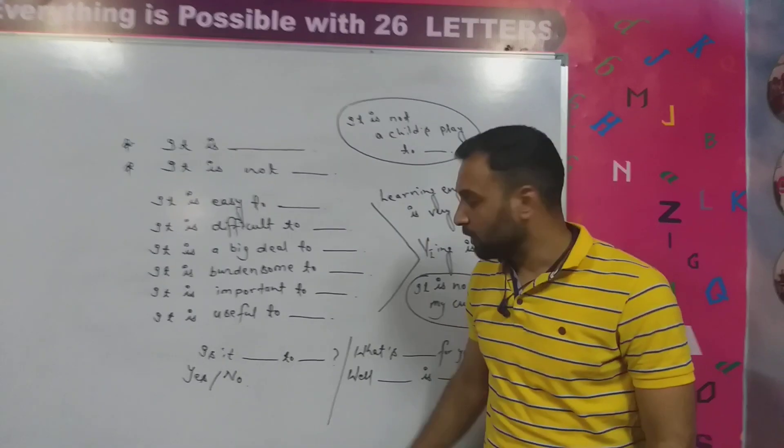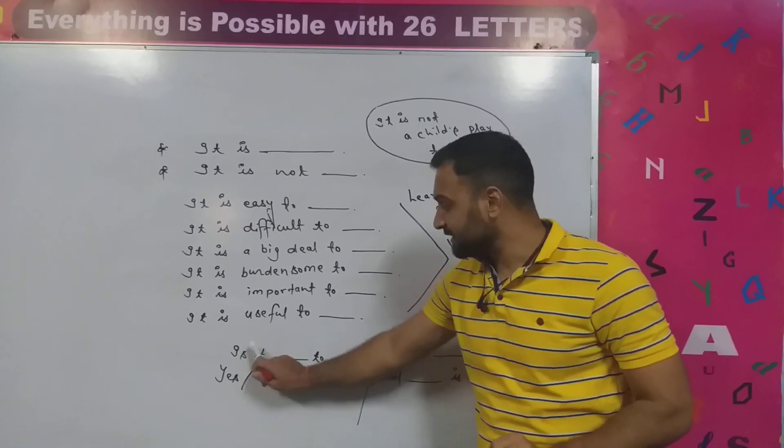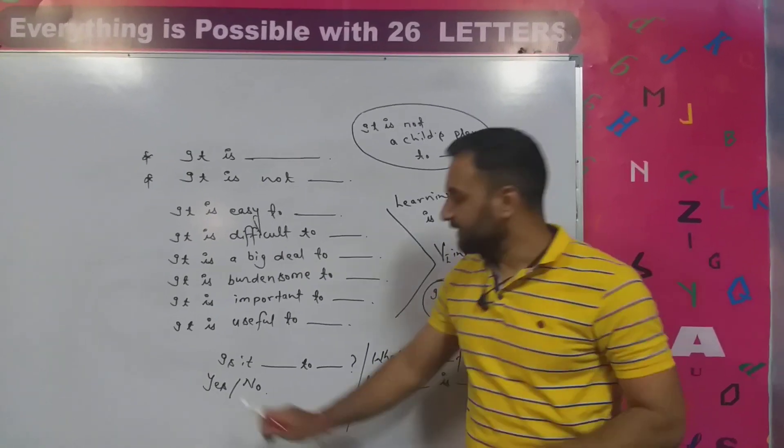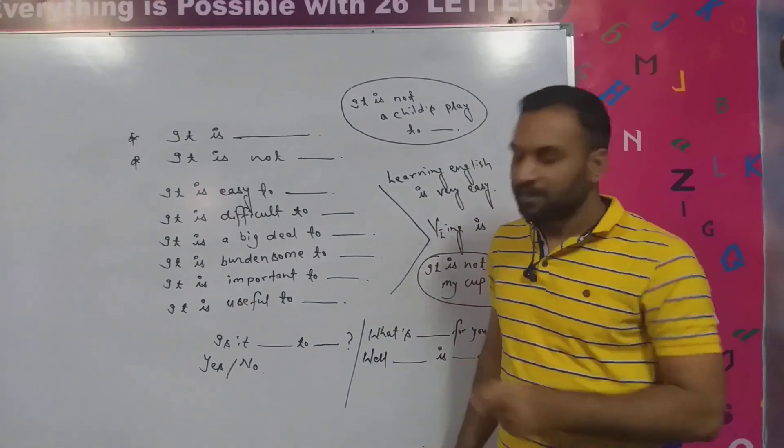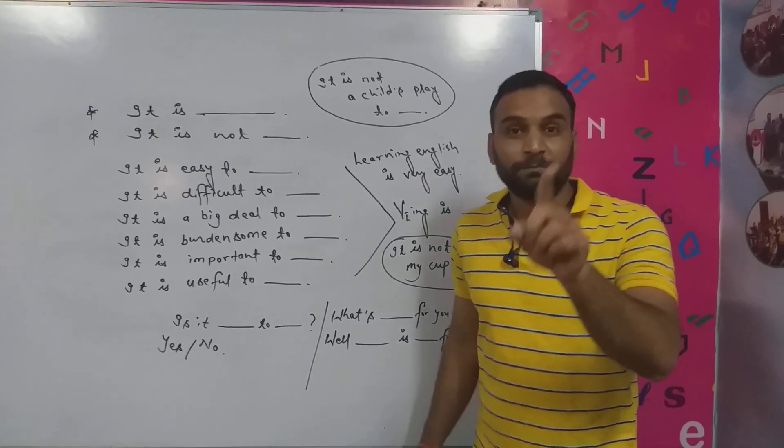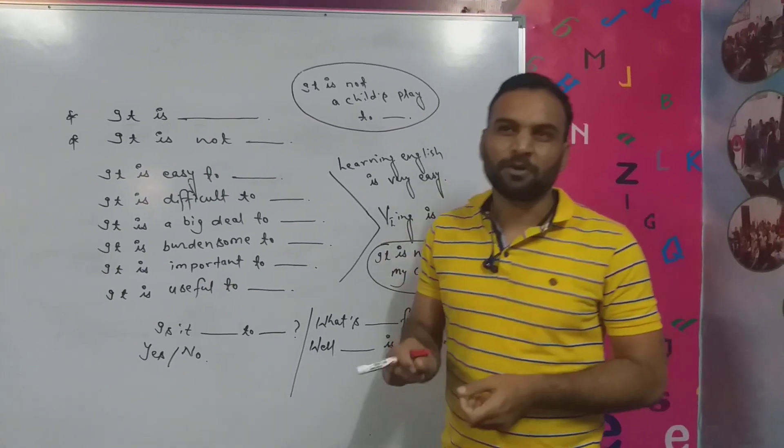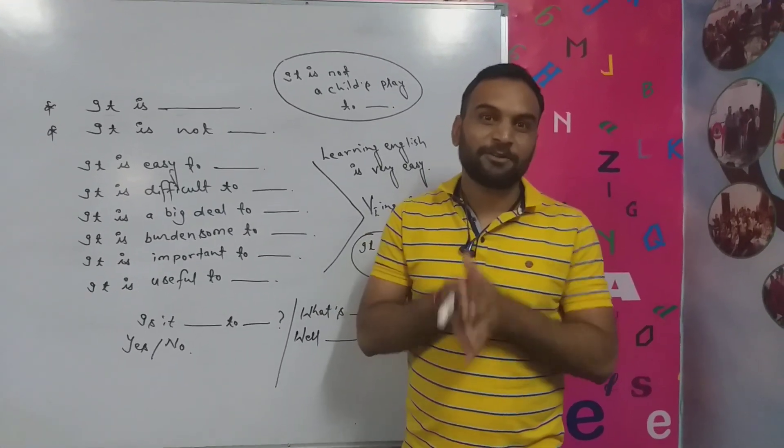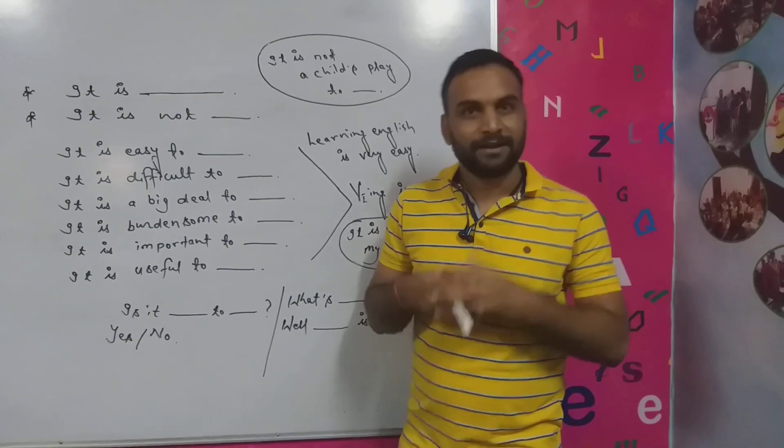Now if you want to make questions about this, you start with 'is it'. Like if I want to ask you: is English speaking easy for you? Is it easy to speak English for you? This is an interrogative question, and you are supposed to answer in yes or no. Yes, it is easy to speak English. And no, it is not easy to speak English. To make WH-word questions, you add 'what' and directly say. Like: what's easy for you? What's burdensome for you? And the answer to 'what', you will give in gerund form. So what's burdensome for you? Washing clothes is very burdensome for me. What's easy for you? Passing time at home is very easy for me. What's important for you? Getting a government job is very important for me. Like that.